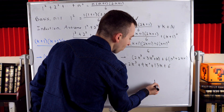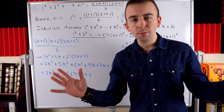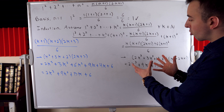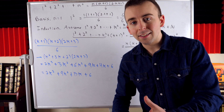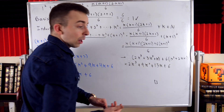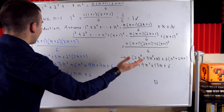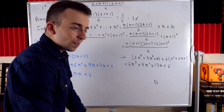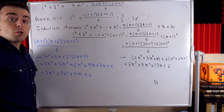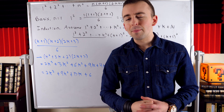That completes the proof. Not the most elegant induction proof in the world, but a proof is a proof. In the induction step we assumed the result was true for some positive integer k, then showed it must be true for k plus 1. In conclusion, we have proved that the sum of the first n squares — 1 squared plus 2 squared up to n squared — equals n times n plus 1 times 2n plus 1, divided by 6.